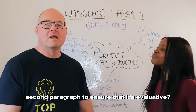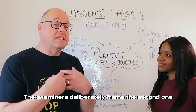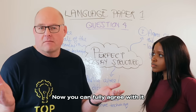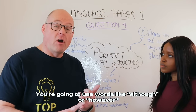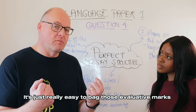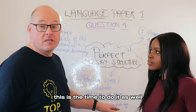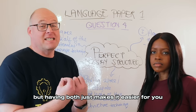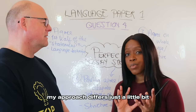The second paragraph is going to partly agree with the second statement. Examiners deliberately frame the second one so that it's easier to partly disagree with. You can fully agree, but to evaluate it's just easier to partly disagree. Use words like 'although,' 'however,' or 'on the other hand' — it's really easy to bag those evaluative marks. If you haven't yet written about any structural techniques, this is the time to do it. Examiners don't mind whether you use structure or language techniques, but having both makes it easier to hoover up marks because there's more to write about.